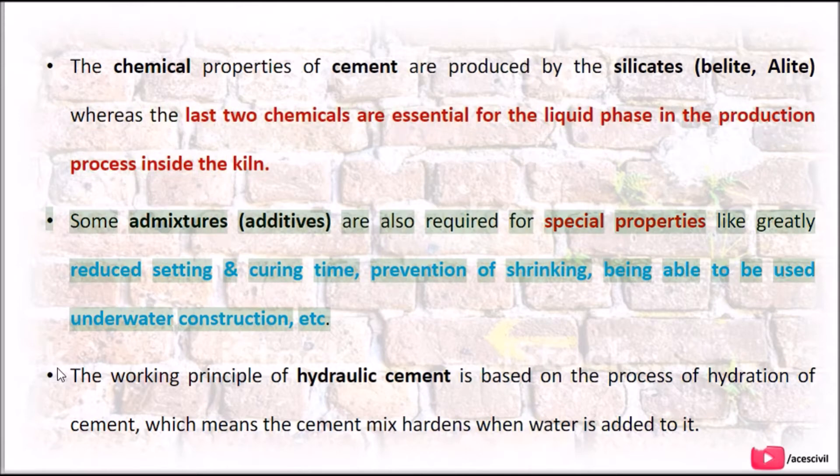Whereas the last two chemicals are essential for the liquid phase in the production process inside the kiln. Some admixtures and additives are also required for special properties like greatly reduced setting and curing time, prevention of shrinking, and being able to be used under water construction.